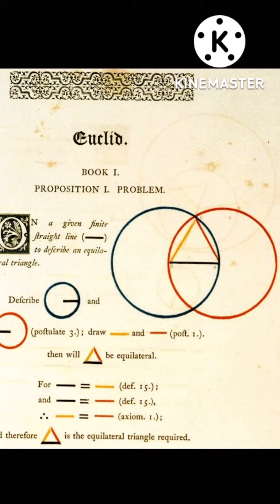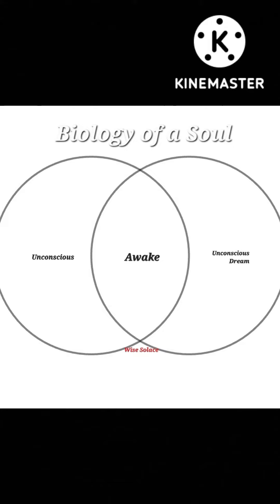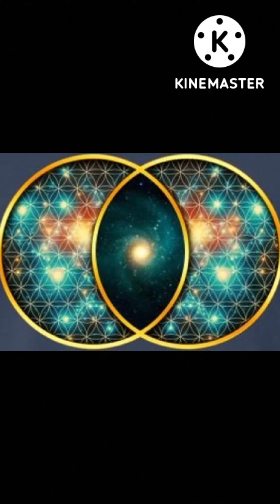Now in geometry, this symbol is the biological formula of a soul — a soul being made up of three states of awareness merged together as one. These three states of awareness are unconscious, dream state unconscious, and awake, which is aware, which is life. That is the soul, or the biological formula of it, in terms of the geometrical symbol.